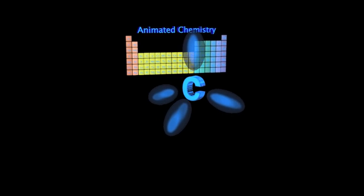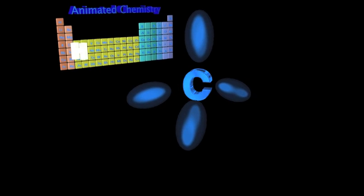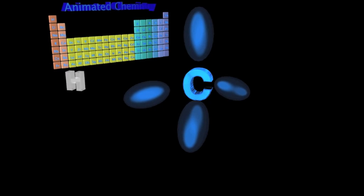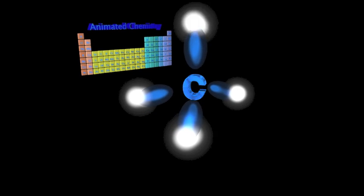To complete each orbital, we need one electron that can be provided by a hydrogen, for example. If that is the case, one carbon will need four hydrogens and the final molecule is methane.